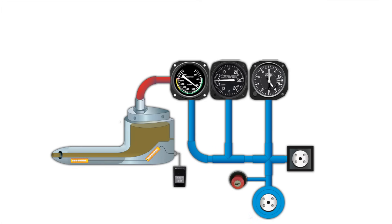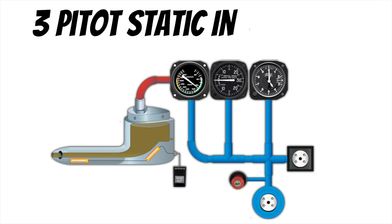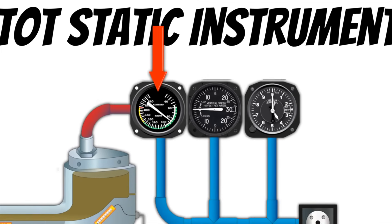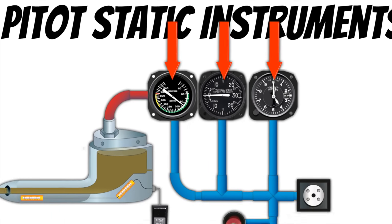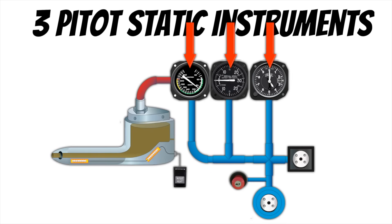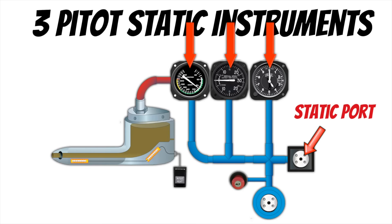Our three pitot-static instruments are the airspeed indicator, the vertical speed indicator, and the altimeter. Now, I really don't understand why we call all of these pitot-static instruments — only one of these is truly a pitot-static instrument, and that's the airspeed indicator. But all of these are connected to the static port, and most of the time they're going to be connected to this primary static port.